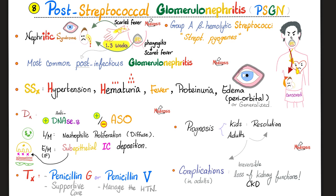Post-streptococcal glomerulonephritis: typically a child with Group A beta-hemolytic streptococci causing pharyngitis or skin infection. One to three weeks later, there is blood in the urine. It's the most common post-infectious glomerulonephritis in children. Features include hypertension, hematuria, fever, proteinuria, and robust periorbital swelling. Labs: positive anti-DNase B; anti-ASO positive if pharyngitis, but negative if skin infection because ASO is destroyed by skin cholesterol. The deposits are sub-epithelial. Treatment: supportive care and penicillin.